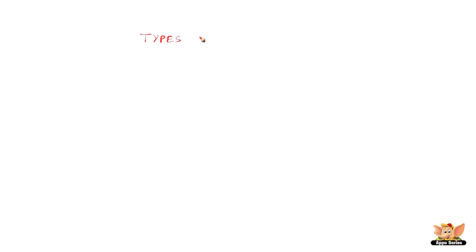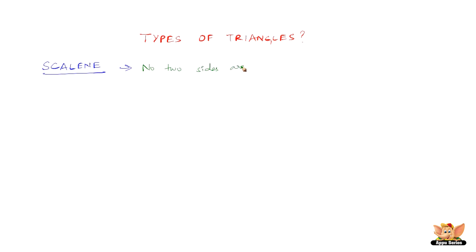In this video, let us look into the various types of triangles. The first one is a scalene triangle. A scalene triangle is a triangle with no two sides equal — all three sides of the triangle will have different lengths. So that is called a scalene triangle.